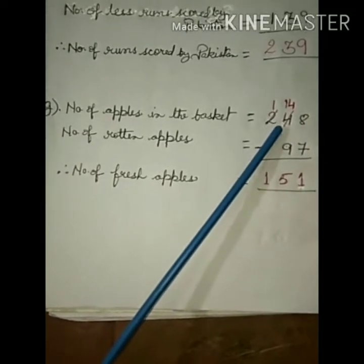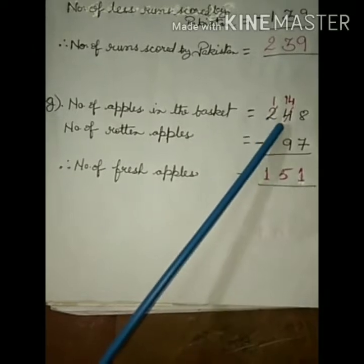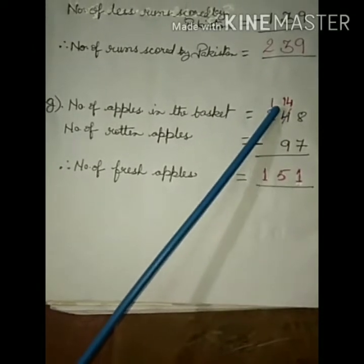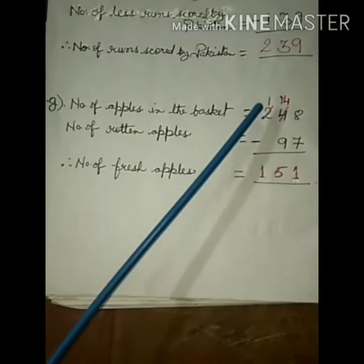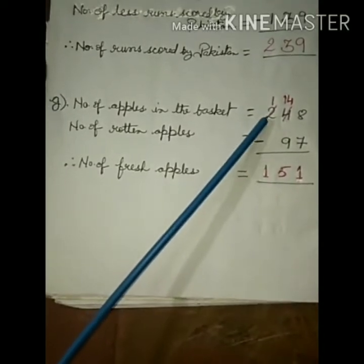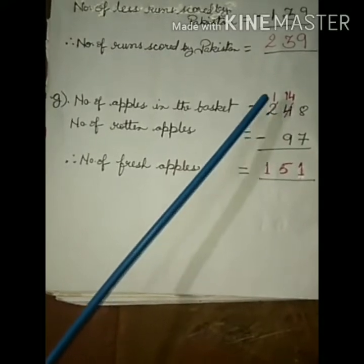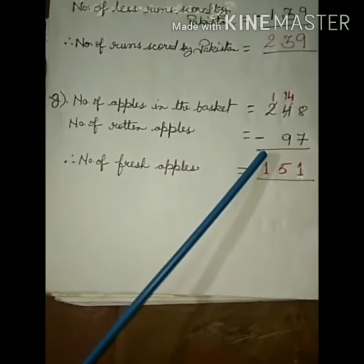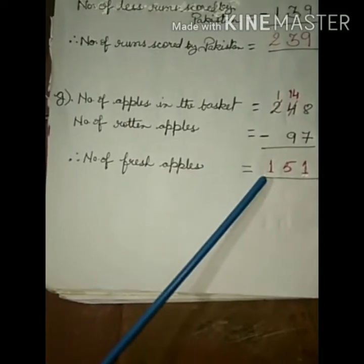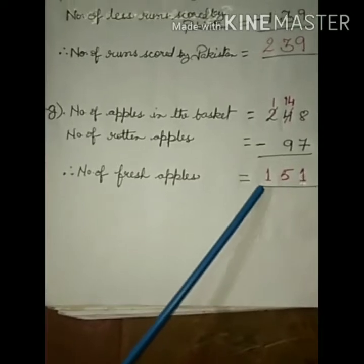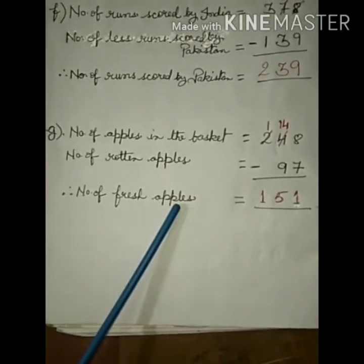So subtract: 8 minus 7 is 1. 4 minus 9, you cannot do, so we have to borrow 1. This tens will borrow 1 from hundreds place, so it becomes 14. 14 minus 9 is 5. Here it becomes 1 because it has given 1 to tens place, that is 4. So 1 minus nothing to subtract, so this 1 will come to this place, hundreds place. So 151. Number of fresh apples is equal to 151.